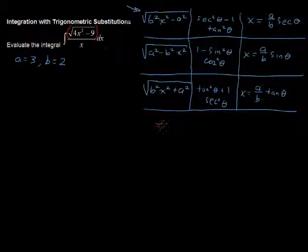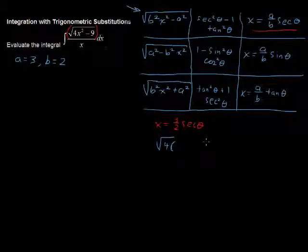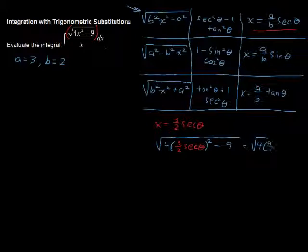I'm going to let x equal a over b, so that's 3 over 2 secant of theta — as promised, this is what we use. Then, rewriting the square root of 4x squared minus 9 as the square root of 4 times x squared, substituting in 3 over 2 secant of theta, minus 9 — this whole thing is being squared. We get the square root of 4 times 9 over 4 times secant squared of theta minus 9.